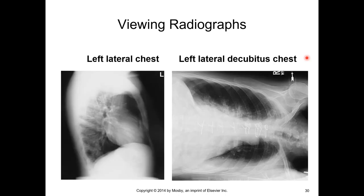Left lateral chest is shown with the front of the body facing to screen right and the posterior facing to screen left. Decubitus should always be demonstrated with the upside up and the downside down. In this case, an R marker indicates the right side of the body, and an arrow marker indicates which side is up — helping the radiographer place the image in the correct orientation after processing.